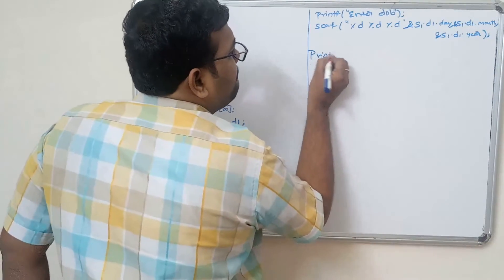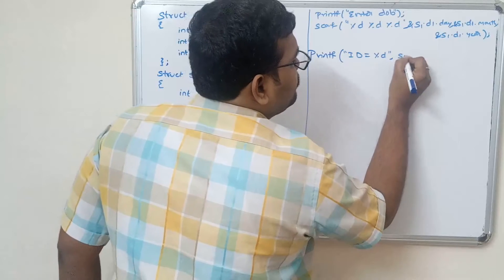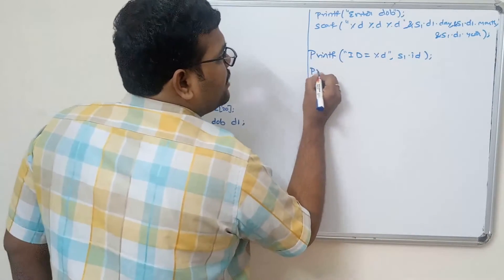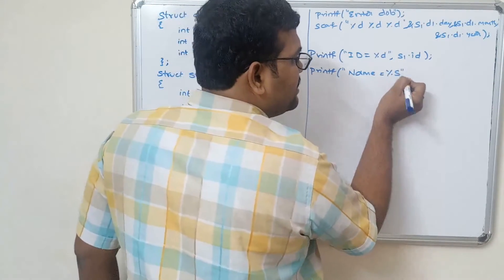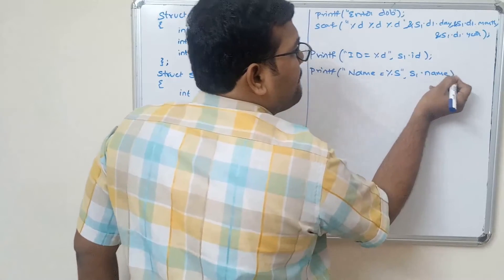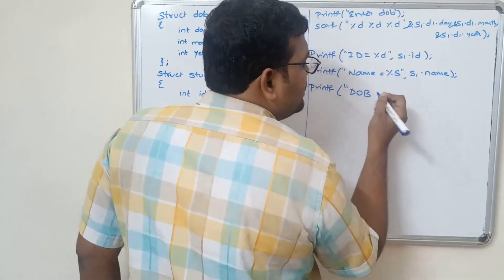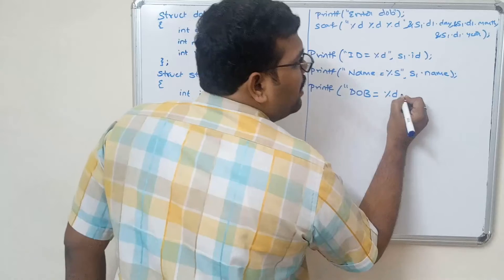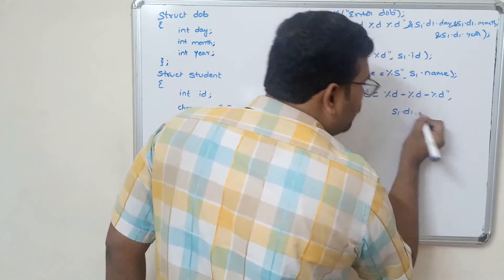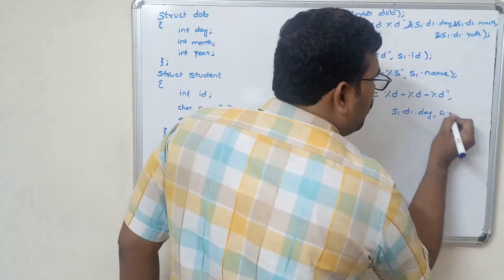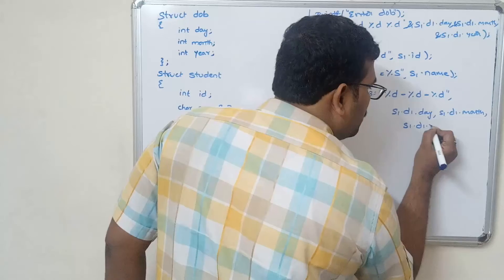For displaying the values, write `printf("ID = %d", s1.id)`. Next, to print the date of birth: `printf("Date of birth = %d-%d-%d", s1.d1.day, s1.d1.month, s1.d1.year)` and close the braces.